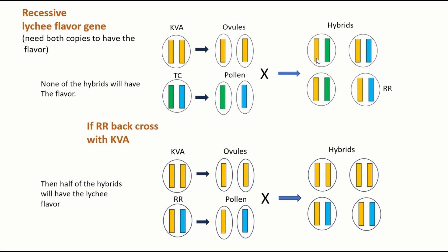In order to get the flavor in the hybrid you need a backcross. In this situation KVA still has two copies, and now they pair with RR. RR is one of their offspring and RR already has one lychee flavor gene. When this segregates into germ cells and the germ cells randomly meet each other, you can see that the yellow ones have a chance to meet another yellow to form what they call a homozygote.